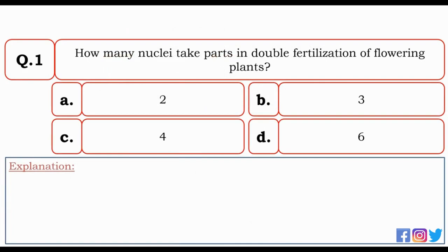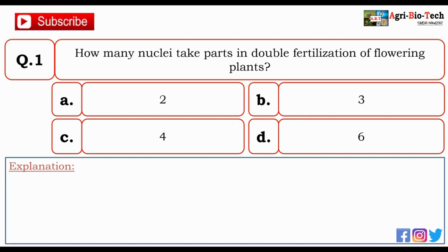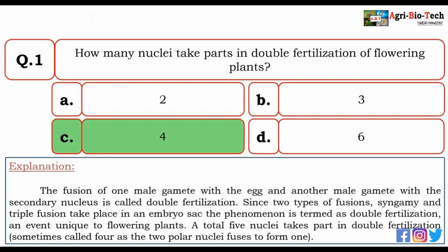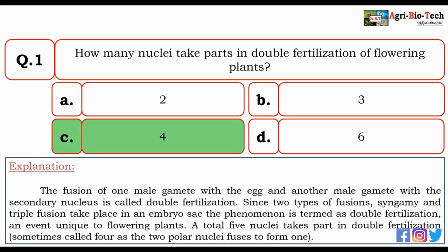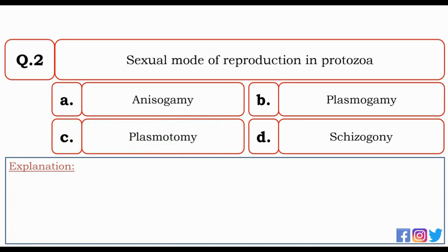First question: how many nuclei take part in double fertilization of flowering plants? Options: two, three, four, and six. The correct option is C — four. The fusion of one male gamete with the egg and another male gamete with the secondary nucleus is called double fertilization. Since two types of fusion — syngamy and triple fusion — take place in an embryo sac, the phenomenon is termed double fertilization, unique to flowering plants.